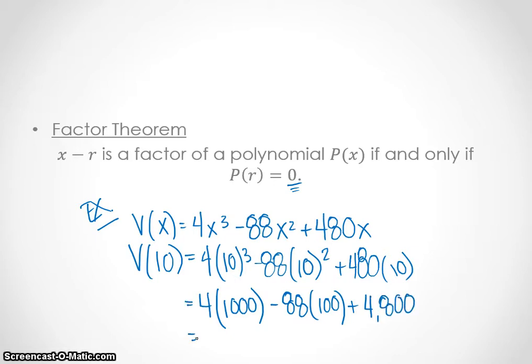Okay, so that's what that is. And then 4 times 1,000 is 4,000 minus 88 times 100 is 8,800 plus 4,800. Now, 4,000 plus 4,800 is 8,800. So then when we subtract 8,800 off, we are going to get 0.